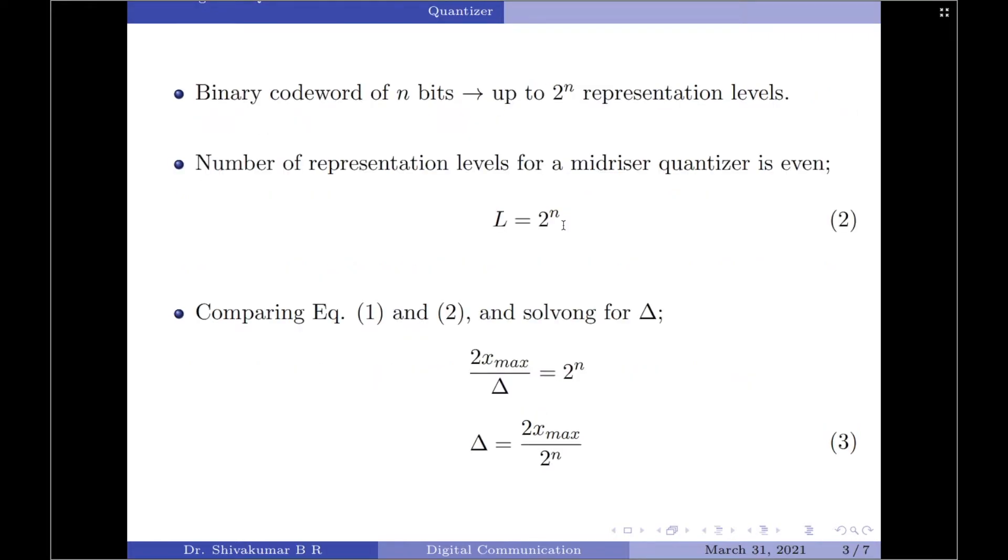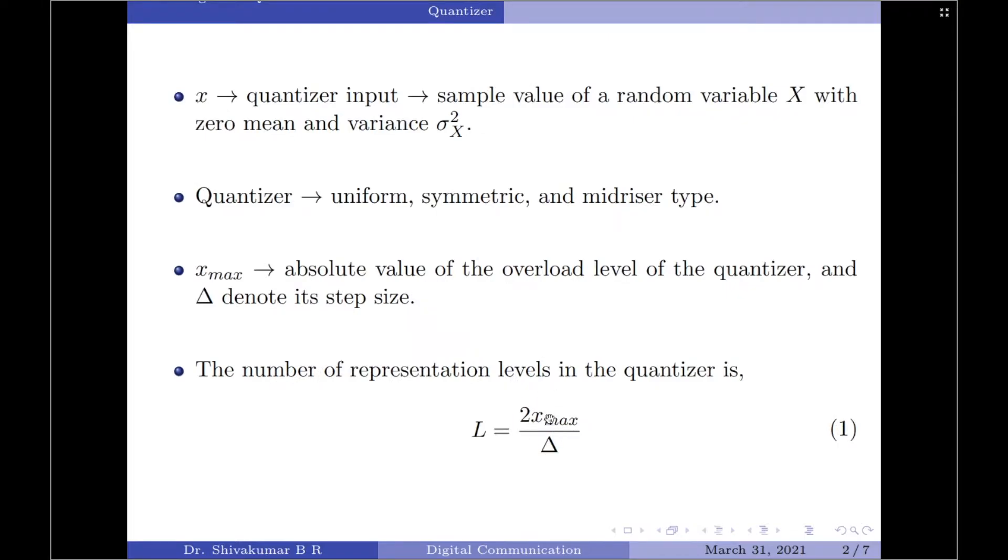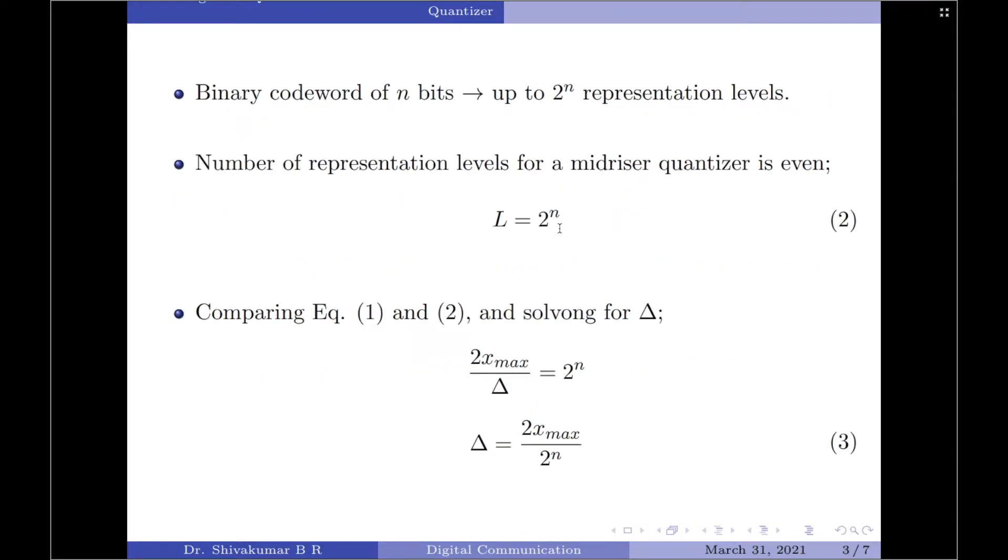So, let us now equate them and try to solve for Δ. Now, I am taking the RHS of equation 1 as well as that of equation 2. I am going to equate them and solve for Δ. So, 2 into x_max divided by Δ equals 2^n. Upon rewriting, I get an expression for Δ as 2 into x_max divided by 2^n.